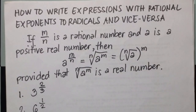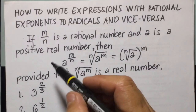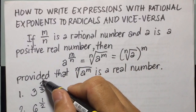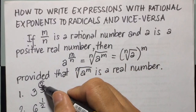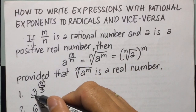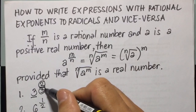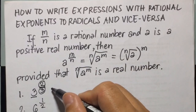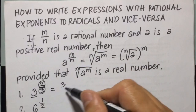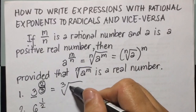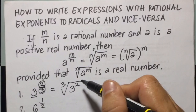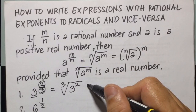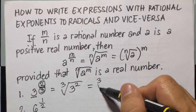For example, number 1: 3 to the power of 2 over 3. If we're going to rewrite this to radical form, 2 will be the exponent of the base 3, and the denominator 3 will be the index or order. So you can write that as cube root of 3 squared. Since 3 squared is 9, we get cube root of 9.